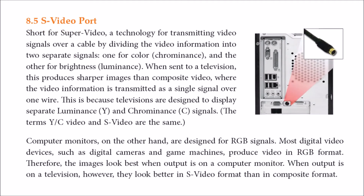Then we have the S-Video port. S-Video stands for Super Video. Monitors are designed to show RGB signals, while televisions use luminance and chrominance signals. If you want to connect a computer monitor to a TV or convert between these two signal types, you use the S-Video port. It has a female jack on the PC and a male jack on the cable.